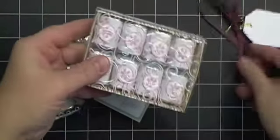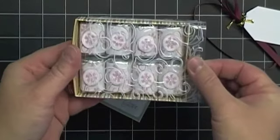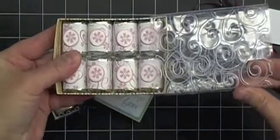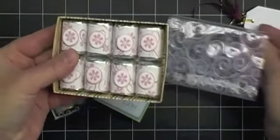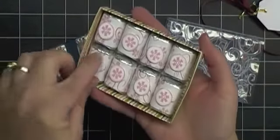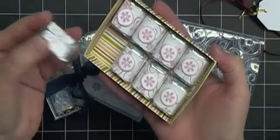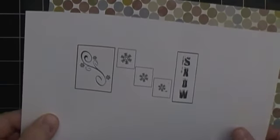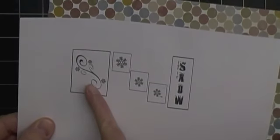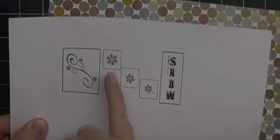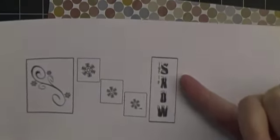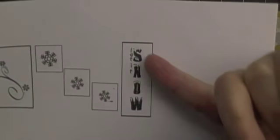I'm just going to take this ribbon off and I'm going to be using my Cuttlebug to emboss this clear plastic that goes over the top. Inside here are eight chocolate nuggets. The stamps that I'm going to use from my Snowman's Prayer stamp set is the Flourish and then the three individual snowflakes. There's also a stamp that says, Let it Snow. I'm going to use that for my tag.